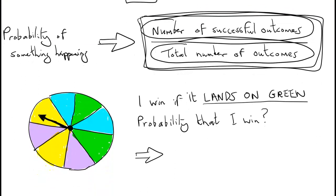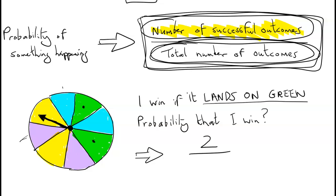For example, if I play a game on a spinner with 2 yellow slots, 2 green slots, 2 blue slots, and 2 lilac slots, and I win if it lands on green — the number of successful outcomes is 2 green, divided by the total of 8 segments in the spinner. So it's 2 out of 8, which simplifies to 1 out of 4.